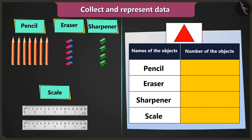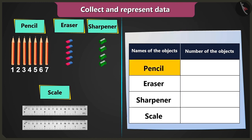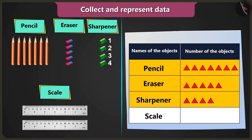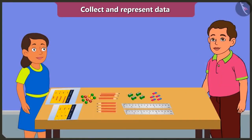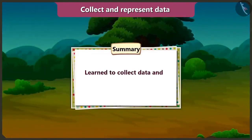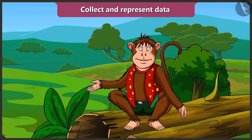So we will draw triangles to fill the table. You have seven pencils, so draw seven triangles. Five erasers, so draw five triangles. Four sharpeners, so draw four triangles. And two scales, so draw two triangles. Absolutely right, well done Bubbly! Friends, in this video you learned about collecting data and representing them in a table.